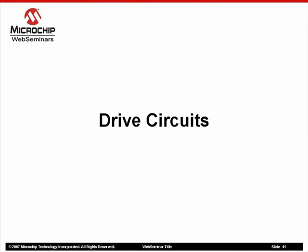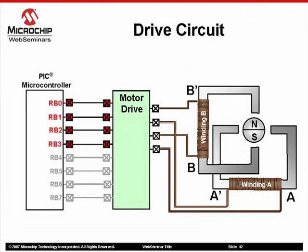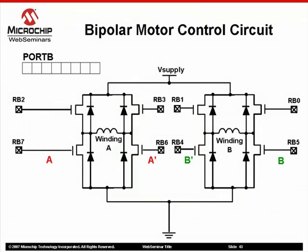Let's move away from stepping algorithms and discuss drive circuits. The lower four bits of the port B peripheral are used in conjunction with the motor drive circuit to control current flow through the winding. Looking inside the black box, a stepping motor drive circuit is created using two H-bridges.